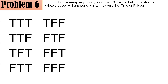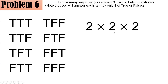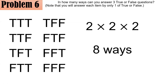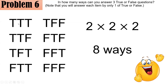Using the fundamental counting principle, we have three slots — one for each question. The first item can be answered in two ways: true or false. The second item also two ways. The third item another two ways. Multiplying them: two times two times two gives eight ways in all. Those eight ways match exactly the list we wrote out.